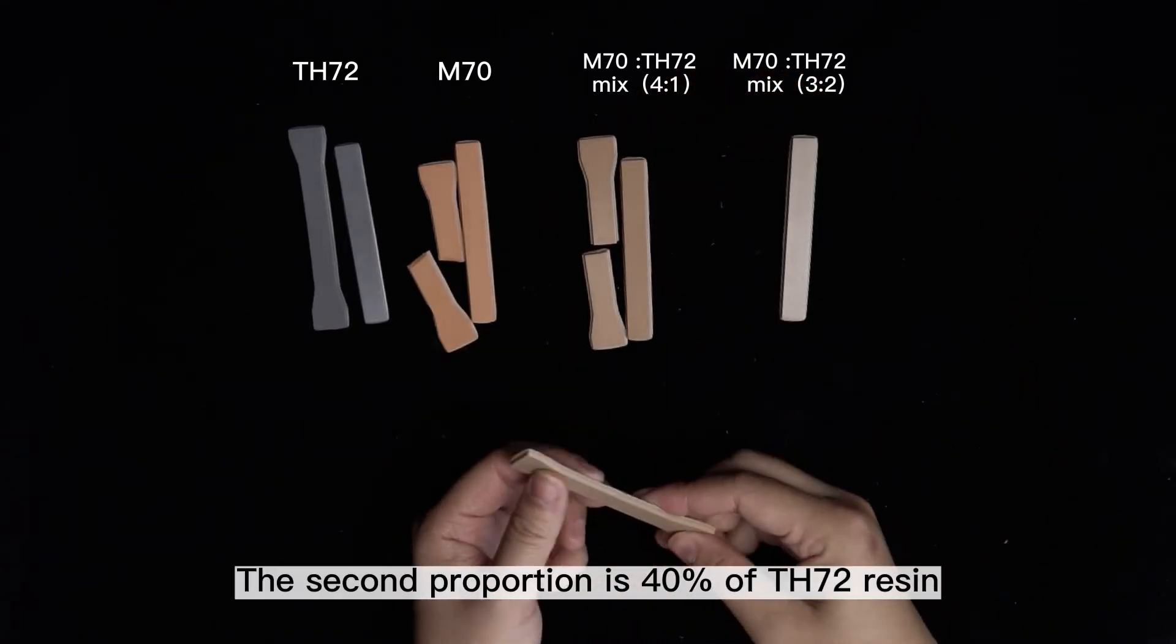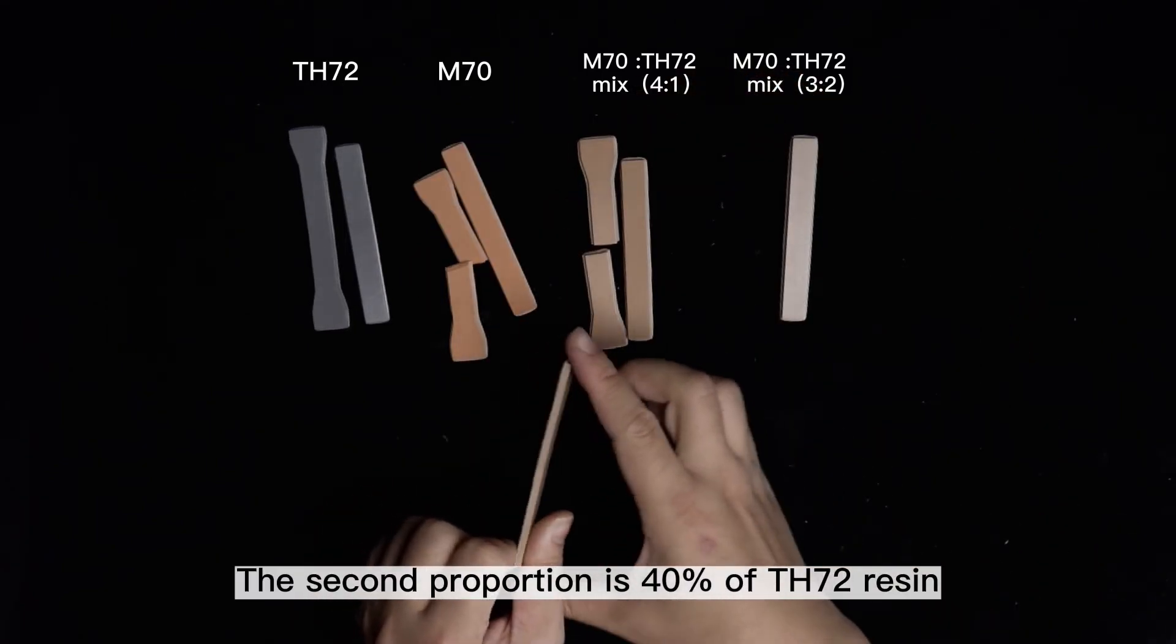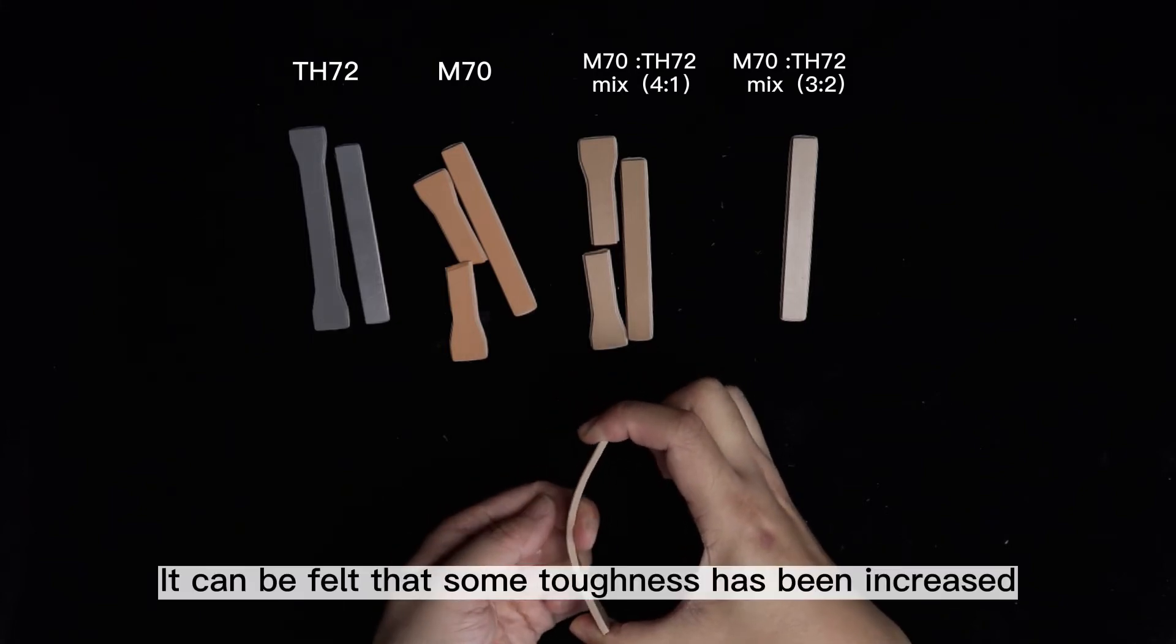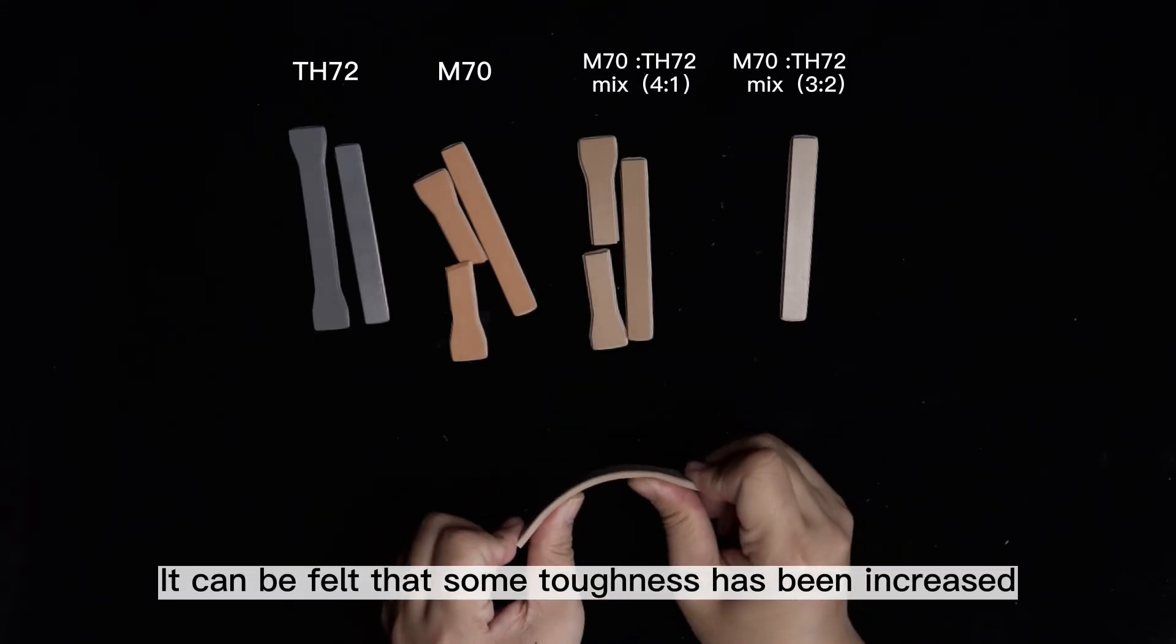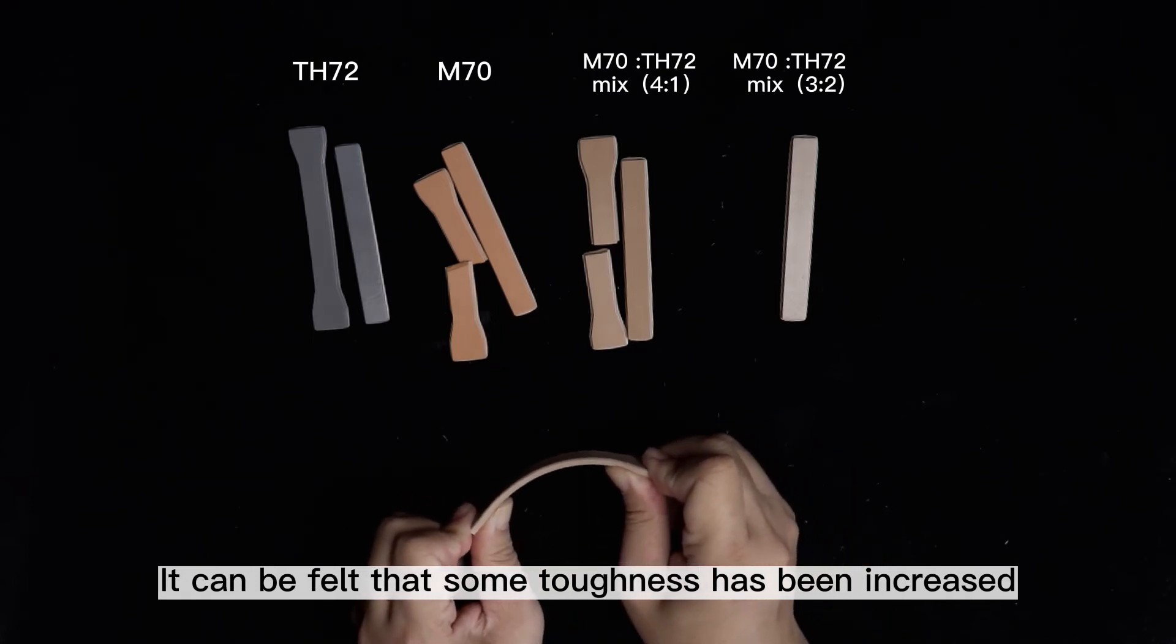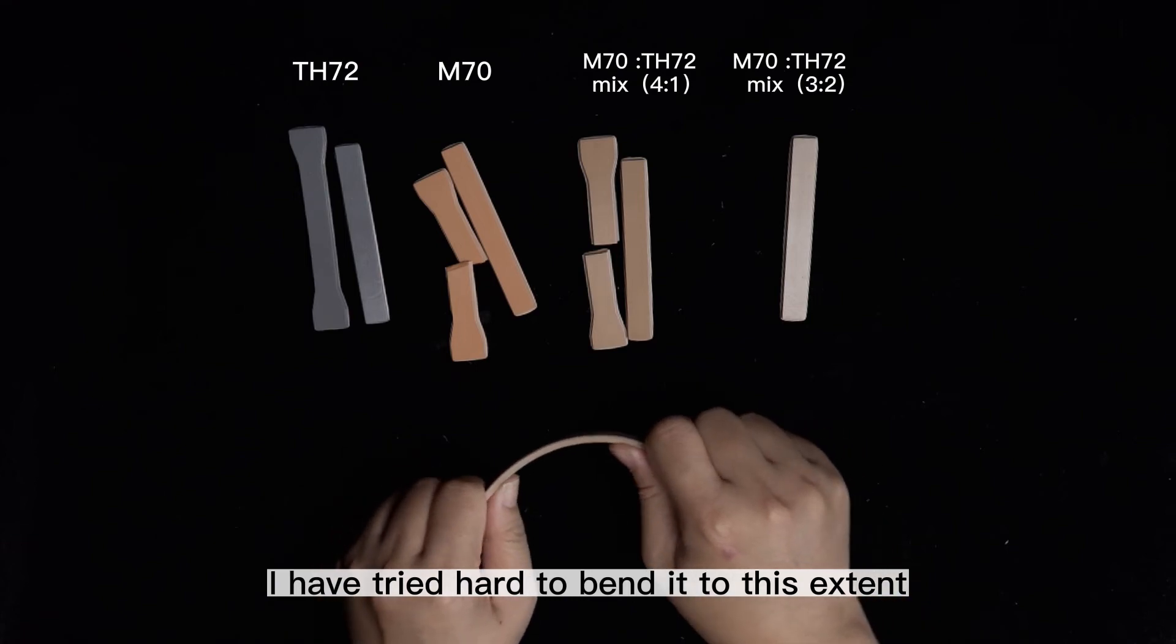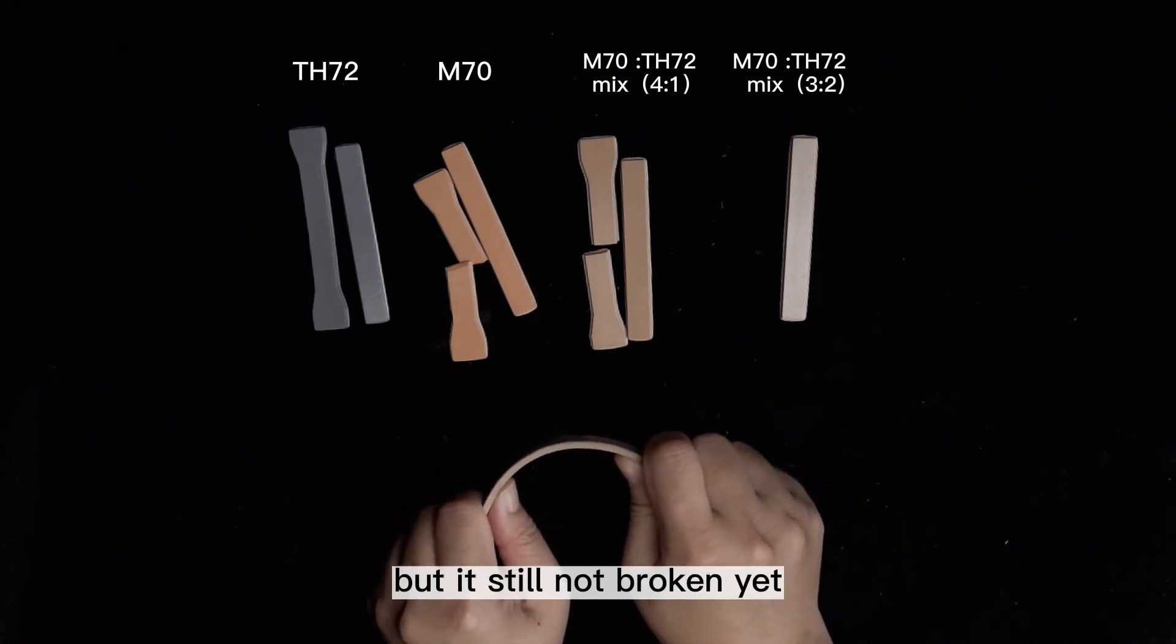The second proportion is 40% of TH72 resin, which is obviously different. You can see that some toughness has been increased. See, I have tried hard to bend it to this extent, but it's still not broken yet.